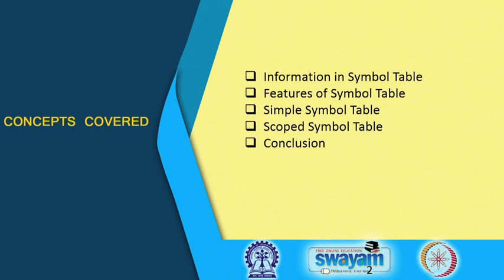In this part of the lecture we will be looking into how to make symbol table organization efficient. First we will look into the typical information stored in the symbol table, then the features of the symbol table, then some symbol table organization policies like simple symbol tables and scoped symbol tables, and finally we will come to the conclusion.